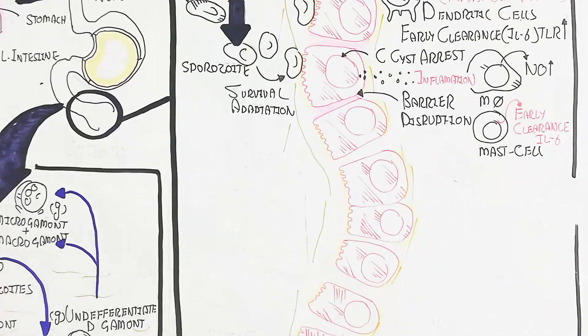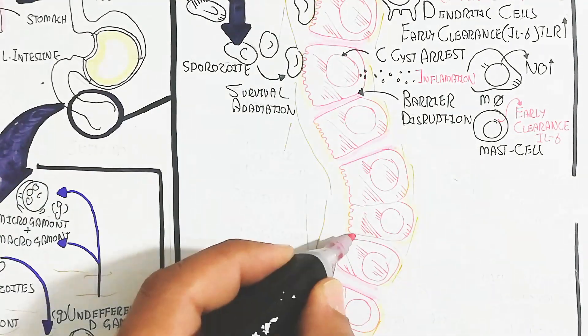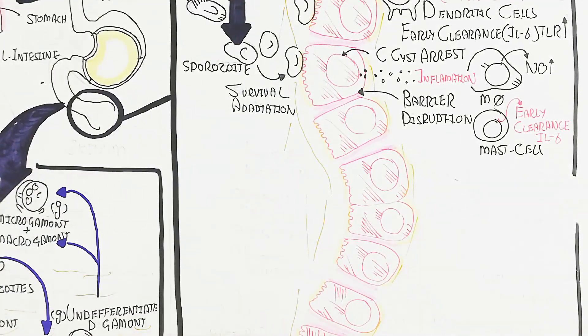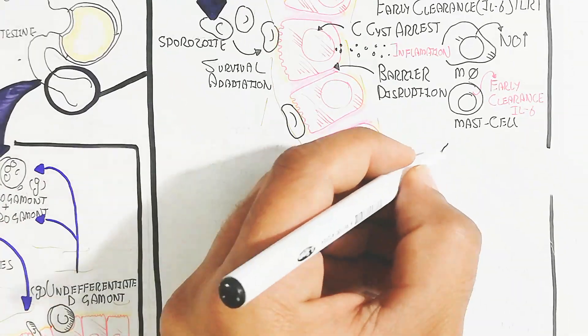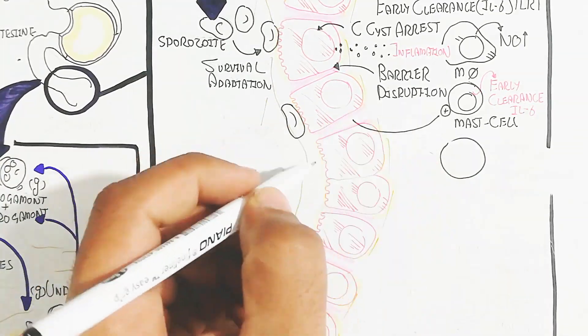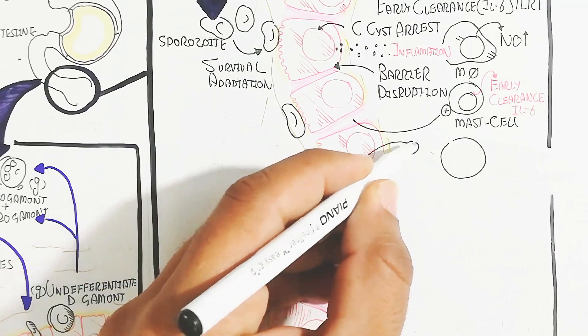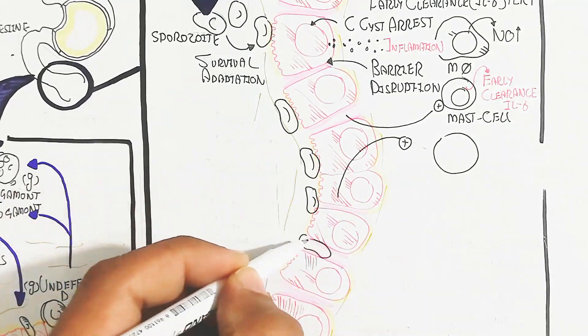Early clearance due to interleukin-6 will recruit the mast cell. The mast cell will also be part of an allergic reaction in the digestive system.